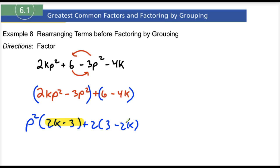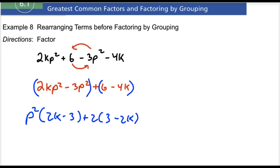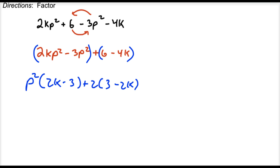Notice that we have a GCF of 2k minus 3. Wait a minute, this is a 3 minus 2k. Oh snap! So these are not the same. They look very, very similar but they're quite not the same here.